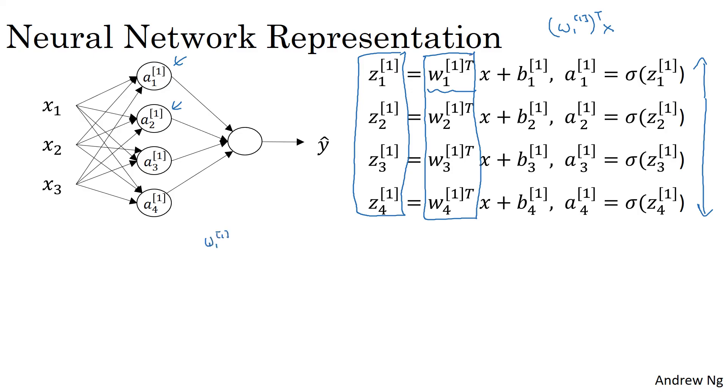Let me take these w's and stack them into a matrix. Then you have w11 transpose. So that's a row vector. This is a column vector transpose gives you a row vector. Then w12 transpose w13 transpose w14 transpose. And so this, by stacking those four w vectors together, you end up with a matrix.